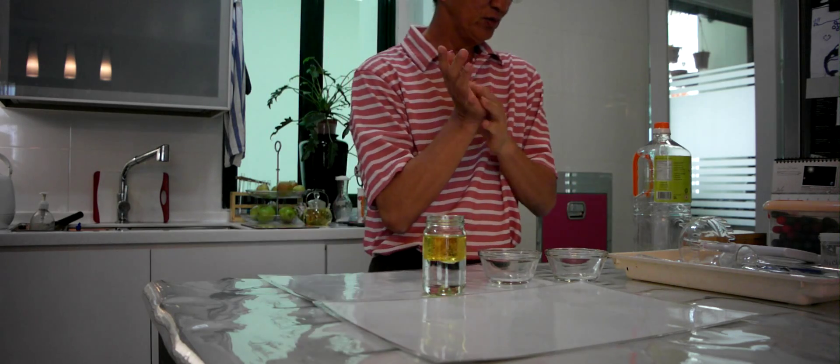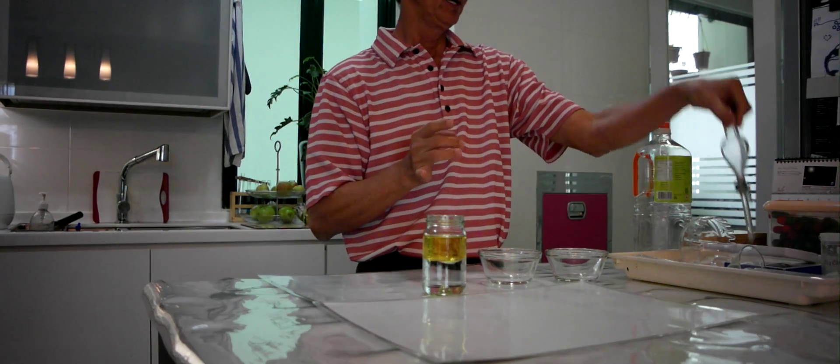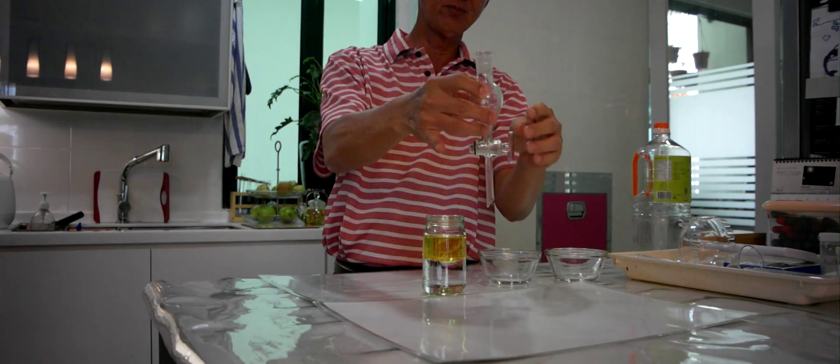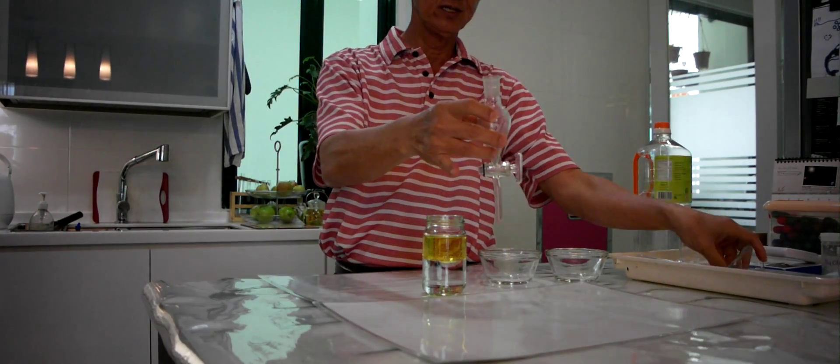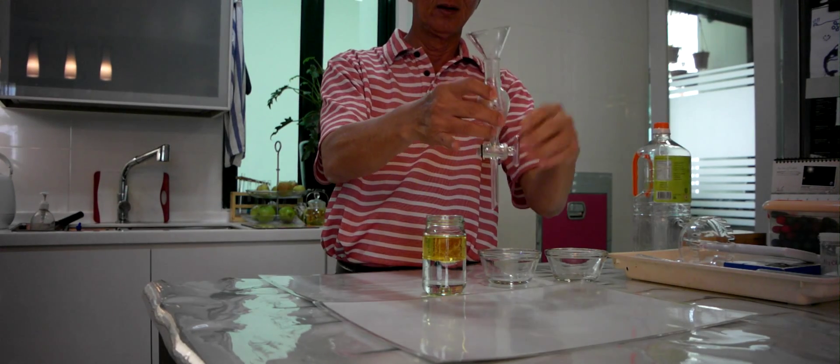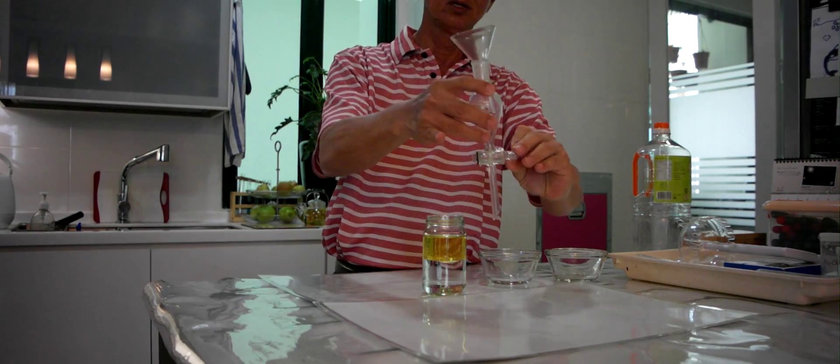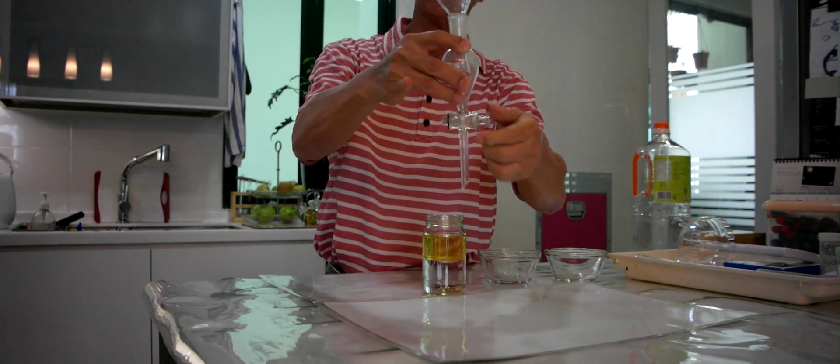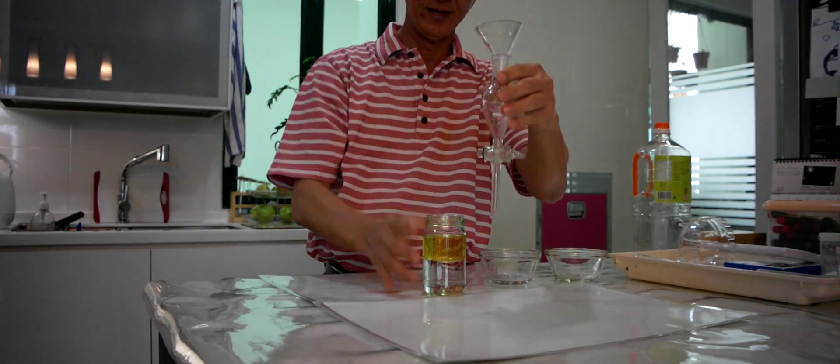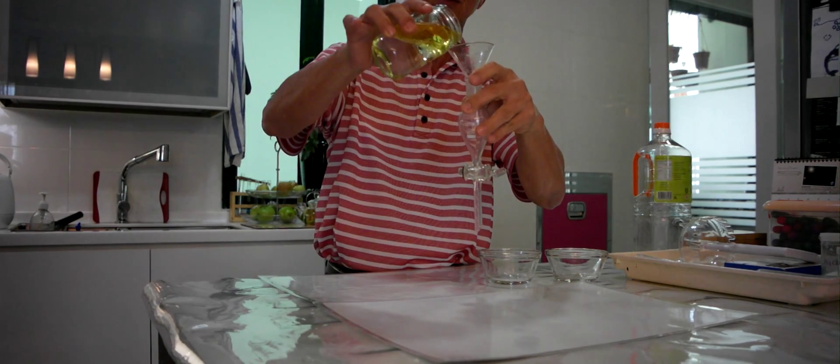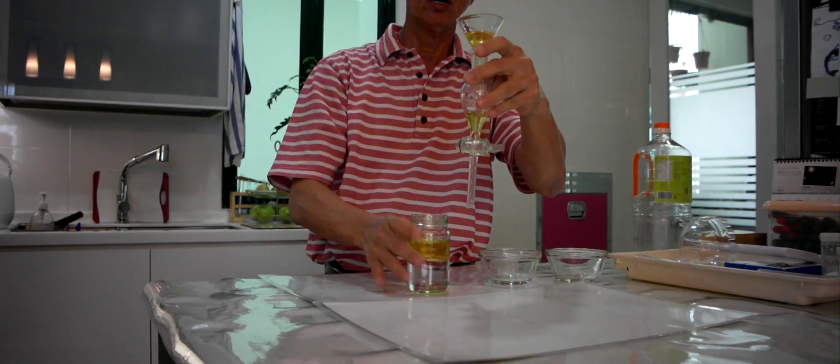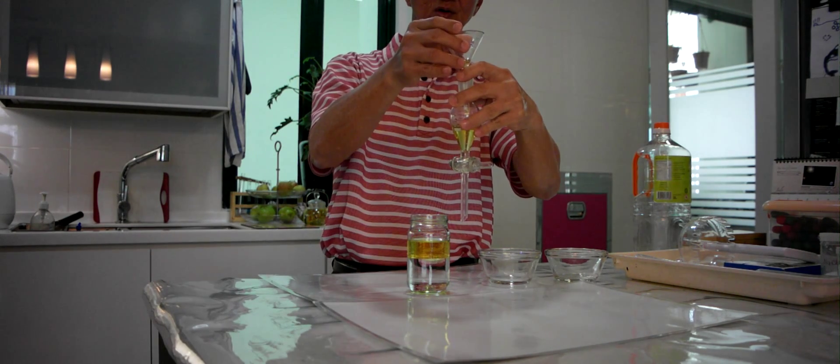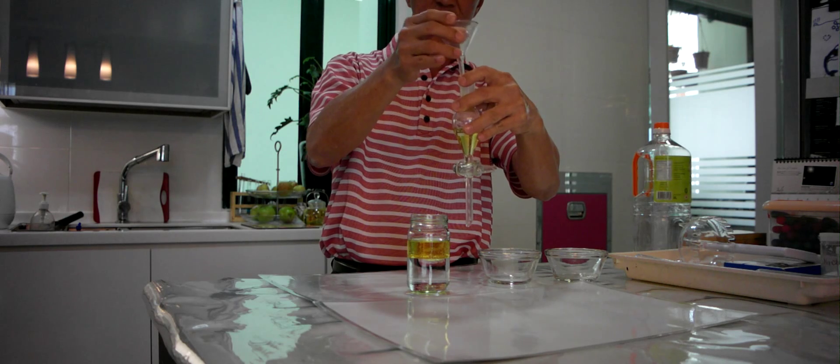So what we'll do is we use a separating funnel like this. As you can see, I will have to close this tap to prevent it from coming out. And then I will pour this in. This is the oil. And then we can pour some water in.